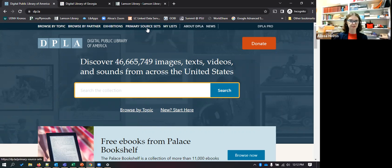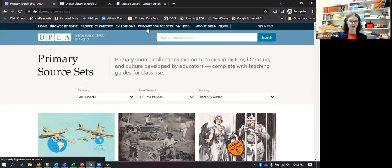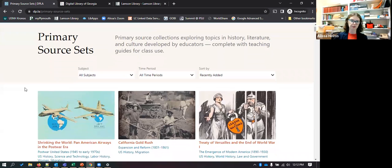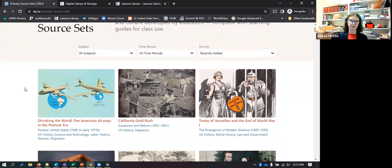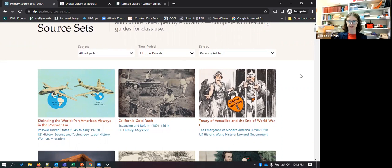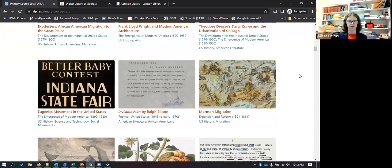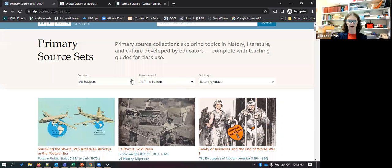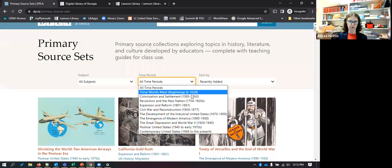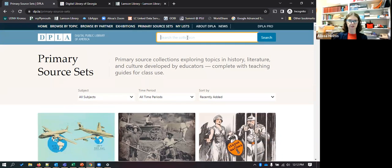One thing to also point out is they have primary source sets. So lots of institutions at the national level have these type of things, and some smaller ones do, like the National Archives have primary source sets as well as the Library of Congress. Again these will be on the resources part of my handout. But primary source sets here, these are just curated sets of primary sources that you can use on particular topics. And there are quite a few in the Digital Public Library of America - they've done really good work there. But you can sort by subject, you can sort by time period, so you can be kind of broad with some of this stuff if you need to.